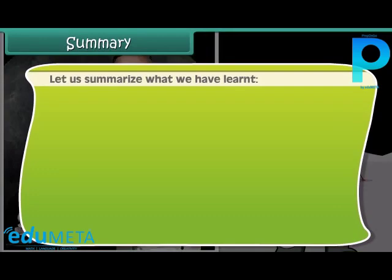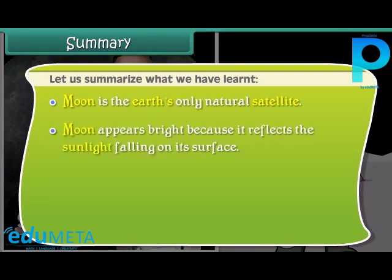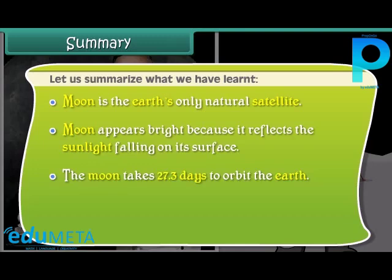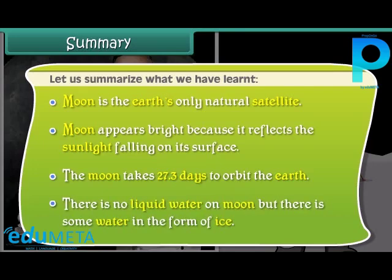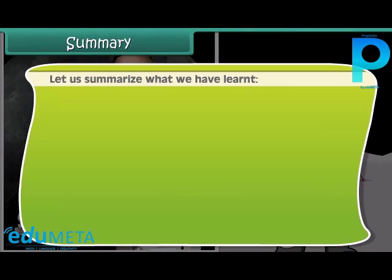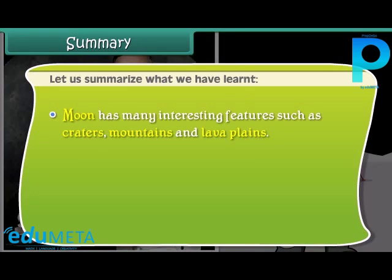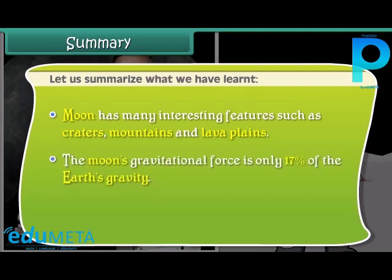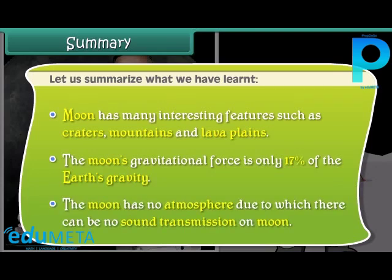In summary: the moon is the Earth's only natural satellite. The moon appears bright because it reflects sunlight falling on its surface. The moon takes 27.3 days to orbit the earth. There is no liquid water on the moon, but there is some water in the form of ice. The moon has many interesting features such as craters, mountains, and lava plains. The moon's gravitational force is only 17% of the Earth's gravity.